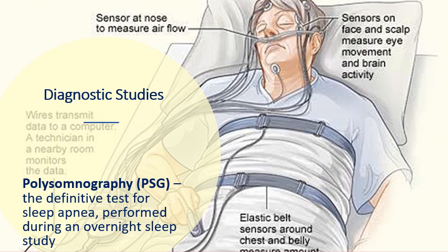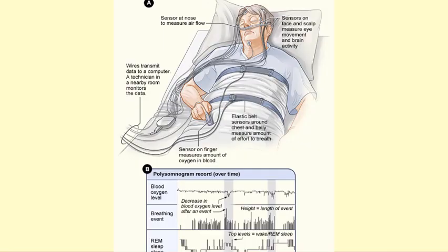There are several diagnostic studies that can be done among patients with OSA. The most common is polysomnography, or PSG — considered the definitive test for sleep apnea, performed during an overnight sleep study. The patient goes to the sleep clinic, sleeps there attached to monitors that monitor brain waves and breathing patterns — brain activity, eye movement, and airflow through the nose. The result of the polysomnography is a polysomnogram, which shows a drop in blood oxygen levels corresponding to a breathing event.